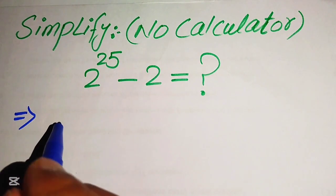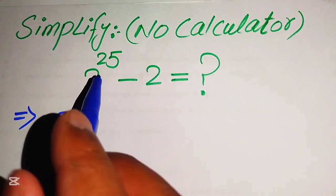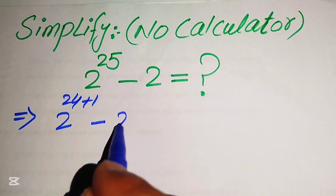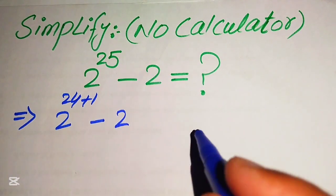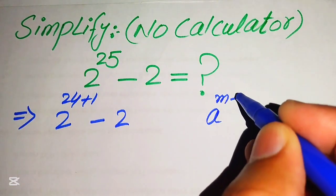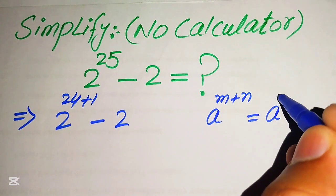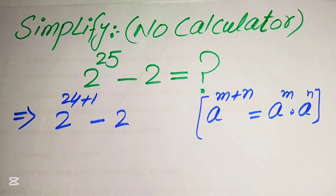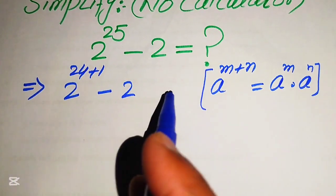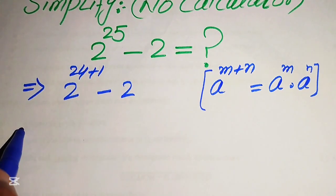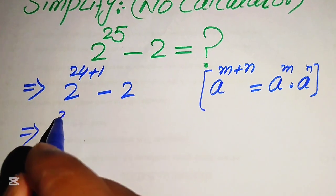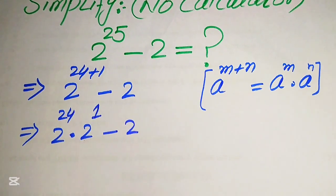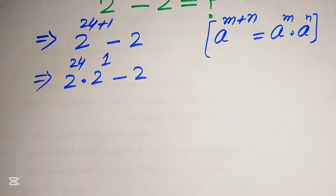We rewrite 2 to the power of 25 by writing the exponent 25 as 24 plus 1, minus 2. Here we apply the exponent law: a to the power of m plus n equals a to the power of m multiplied by a to the power of n. According to this rule, we break the exponent and write it as 2 to the power of 24 multiplied by 2 to the power of 1, minus 2.